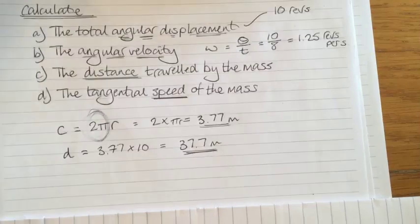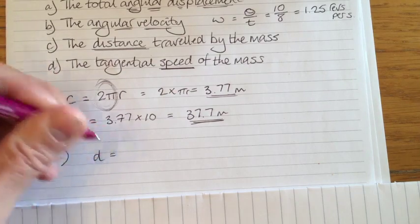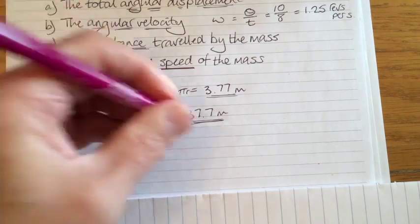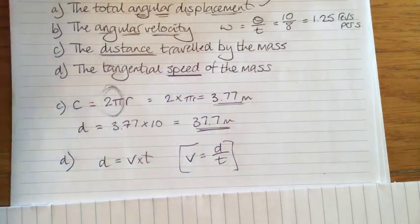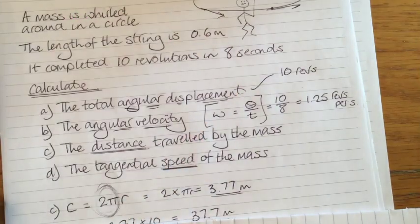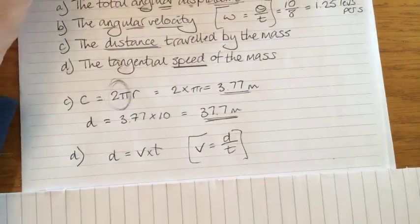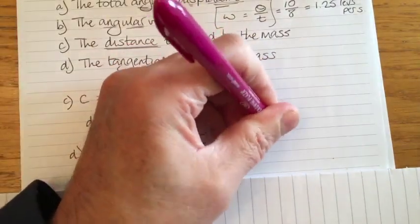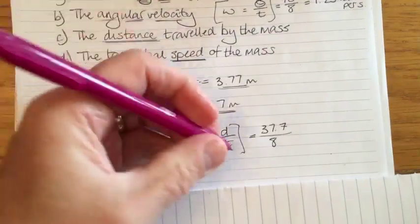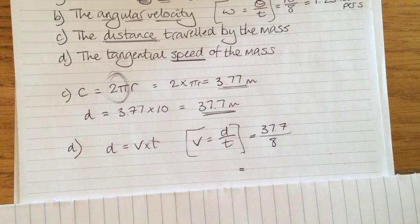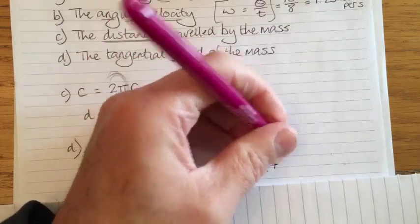So the tangential speed of the mass is just speed equals distance over time. Speed equals distance over time — that's the linear equivalent of the angular equation: angular velocity is angular displacement over time. What distance did it travel? 37.7 metres. It did that in 8 seconds. So, 37.7 divided by 8 is 4.71 metres per second.